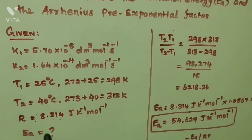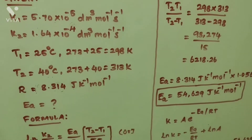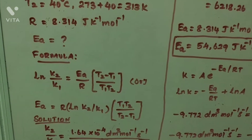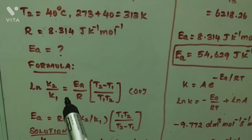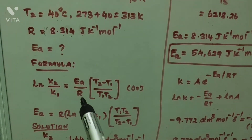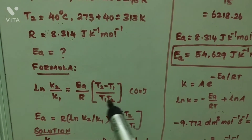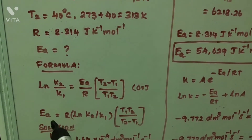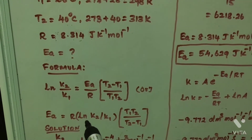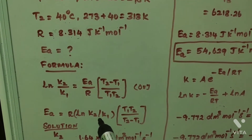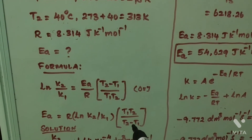The activation energy is what we are going to calculate. The formula to find activation energy is: ln(K2/K1) = Ea/R × (T2 − T1)/(T1 × T2). This can also be expressed as: Ea = R × ln(K2/K1) × (T1 × T2)/(T2 − T1).